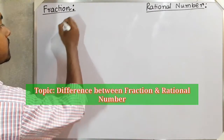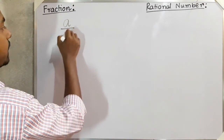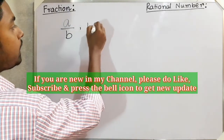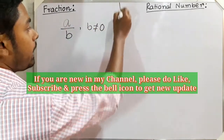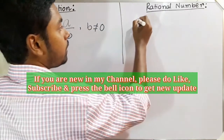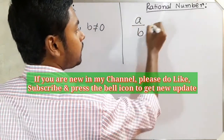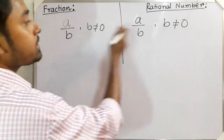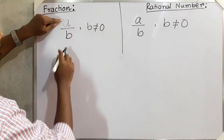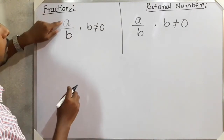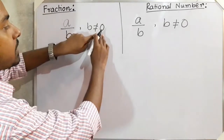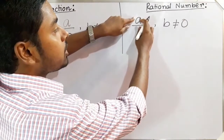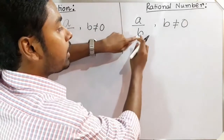The form of a fraction is a/b, where b is not equal to zero. In a rational number also, the form is a/b where b is not equal to zero. Both have the same form and same condition — a/b where b cannot be zero, but a can be zero.